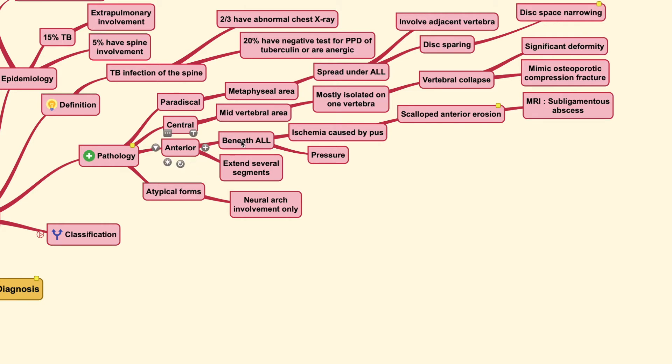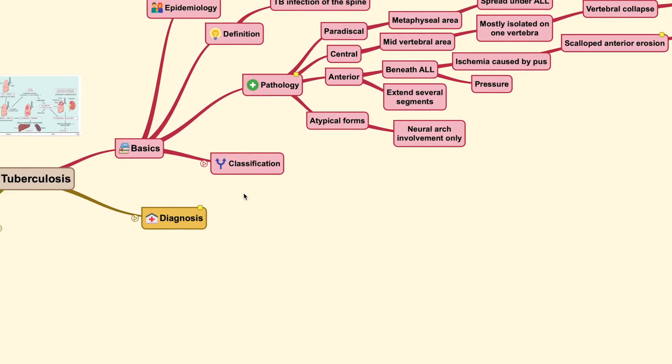The next type would be the anterior type where it spreads underneath the ALL. It's quite similar to the paradiscal type. But the exclusion is that in the anterior type, it usually extends several segments and you could find a scalloped anterior erosion. We'll show you this in the radiographs later on. So, the ischemia caused by the pus which puts on pressure on the anterior aspect of the vertebrae will cause a scalloped type of appearance and the MRI will usually reveal a sub-ligamentous abscess.